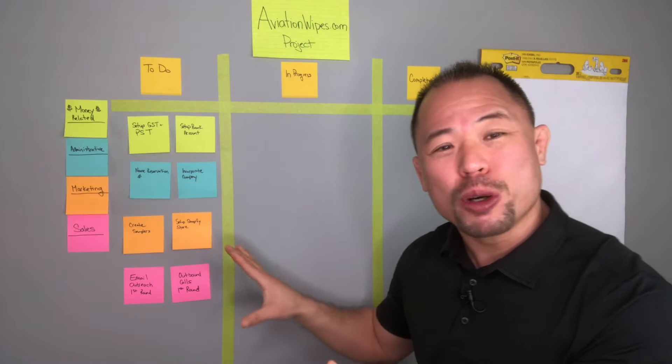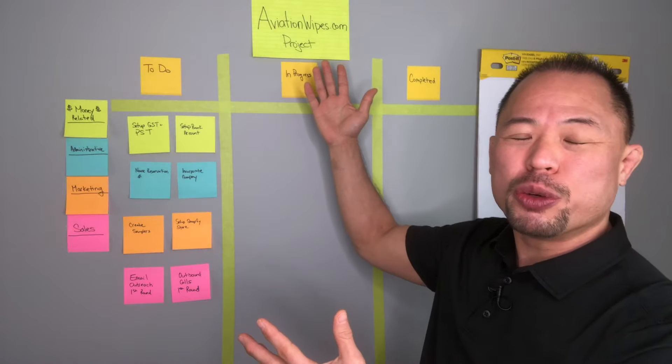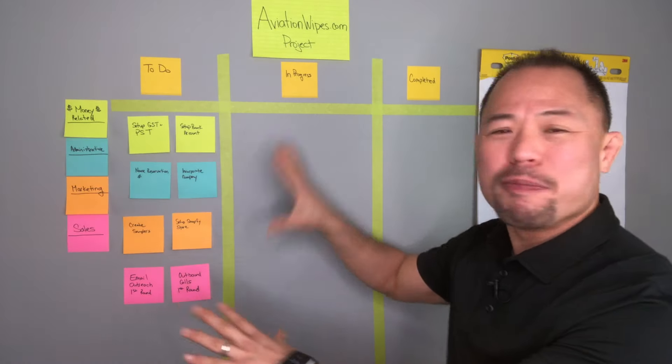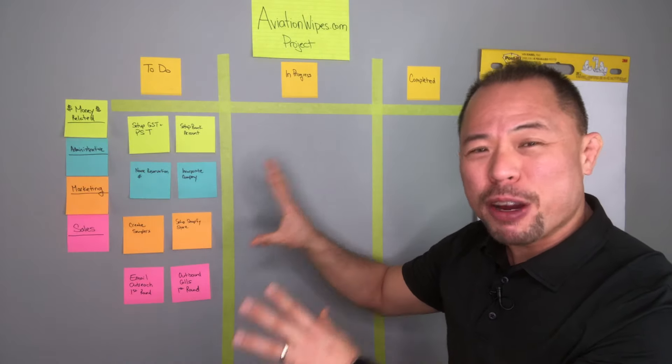Now I use a Kanban board to manage my projects, and my most recent project is creating an e-commerce store called aviationwipes.com. So I decided to mock this up for you to show you how I go about setting this up. It's very easy.